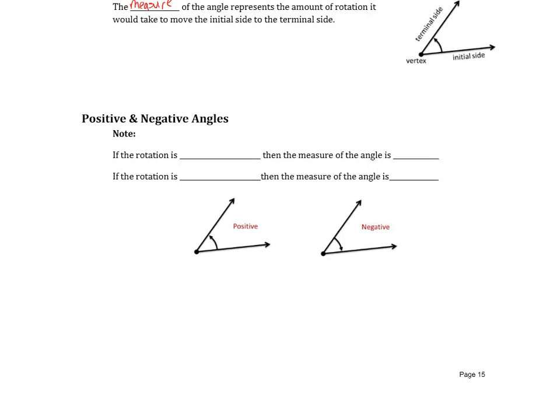We're going to adopt a specific orientation to our angle so that if the rotation is counterclockwise, then that is going to be a positive angle. If the rotation is clockwise, then the measure of the angle is going to be negative.